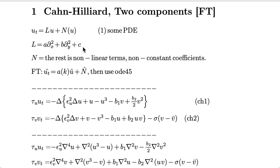N represents the nonlinear terms and non-constant coefficients. If I fully Fourier transform this expression, what I get is something that looks like this. In this expression, the A coefficient contains the k wave numbers, and û is the Fourier transform of the original u variable.